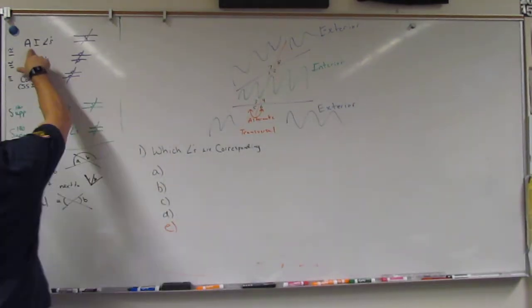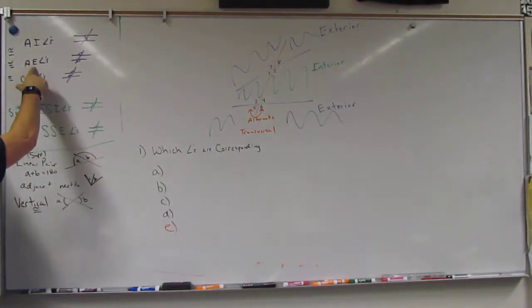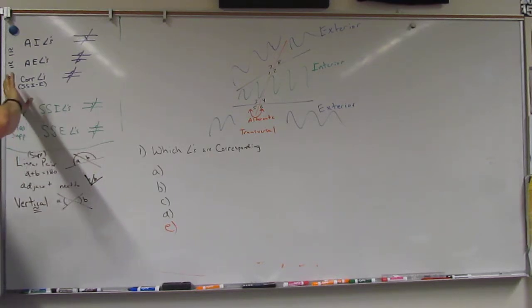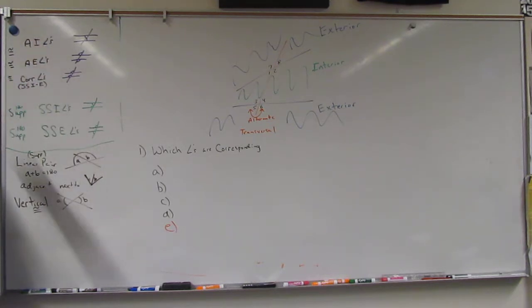So we need to know alternating interior angles, alternating exterior angles, corresponding angles, same-side interior are supplementary. Whereas if they're parallel, these are congruent or the same.